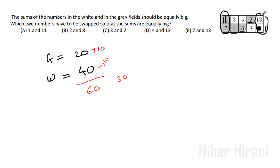And for white: 13 plus 1 is 14, 14 plus 8 is 22, 22 plus 3 is 25, 25 plus 5 is 30. So now they are equal.